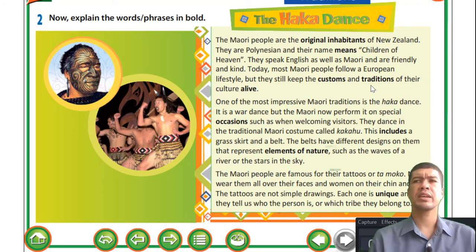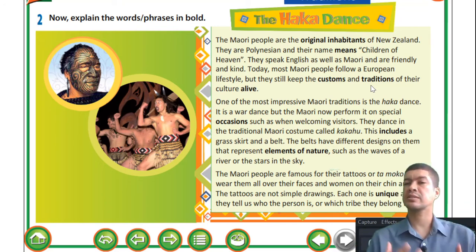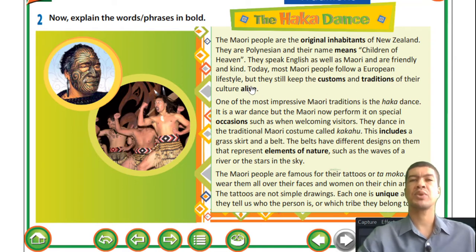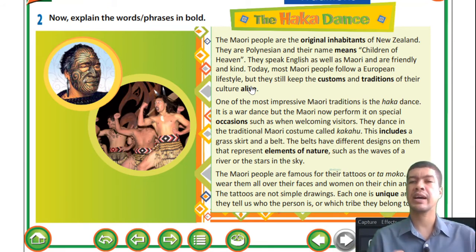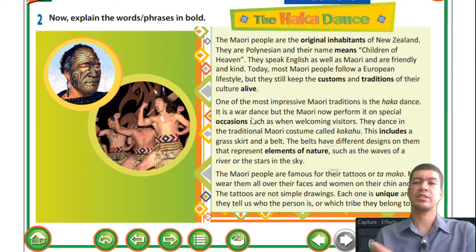When it's your lunar new year you guys give lucky money - that's part of the custom and tradition. When you give the lucky money you're supposed to say something positive for the year. I'm not sure if you guys are doing the dance with the dragon, but that would also form part of the customs and traditions. The next word is 'alive' - 'they still keep the customs and traditions of the culture alive' means they perform it regularly so that it does not go out of fashion. Just like you celebrate lunar new year every year - you are keeping it alive. 'Special occasions' are things that do not happen every single day.